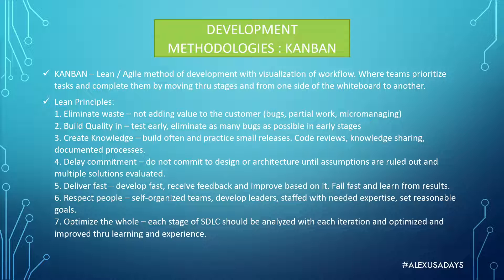Number six in Lean principles is respect people. You want self-organized teams, you want to develop leaders within those teams, and you want to make sure teams are properly staffed with the needed expertise. As a manager or owner, you set reasonable goals for those teams — this is all part of respecting people.